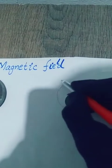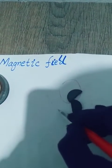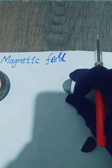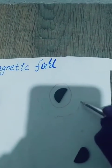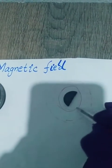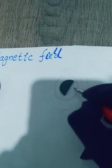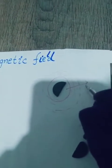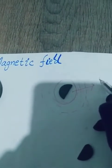This magnet has a specific area in which it will attract another magnet. If this magnet comes out of that area, they will not attract. This specific area is called the magnetic field.